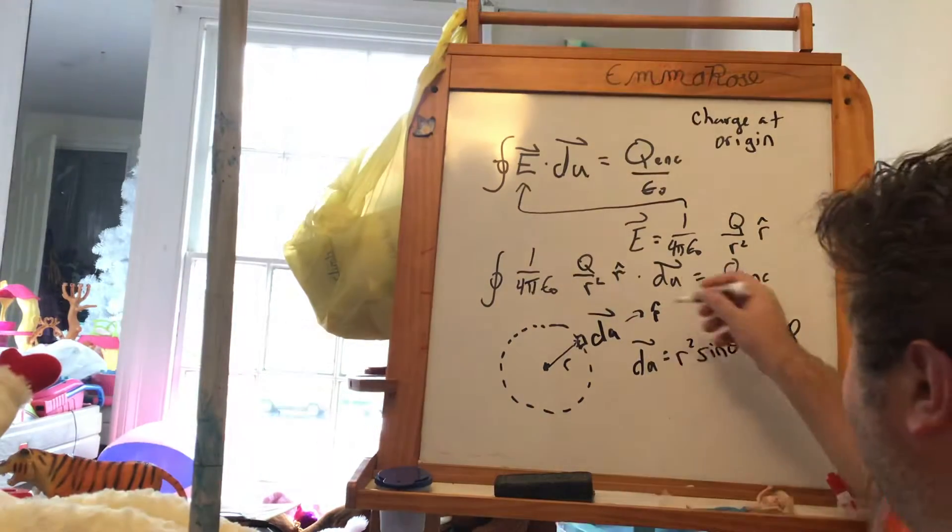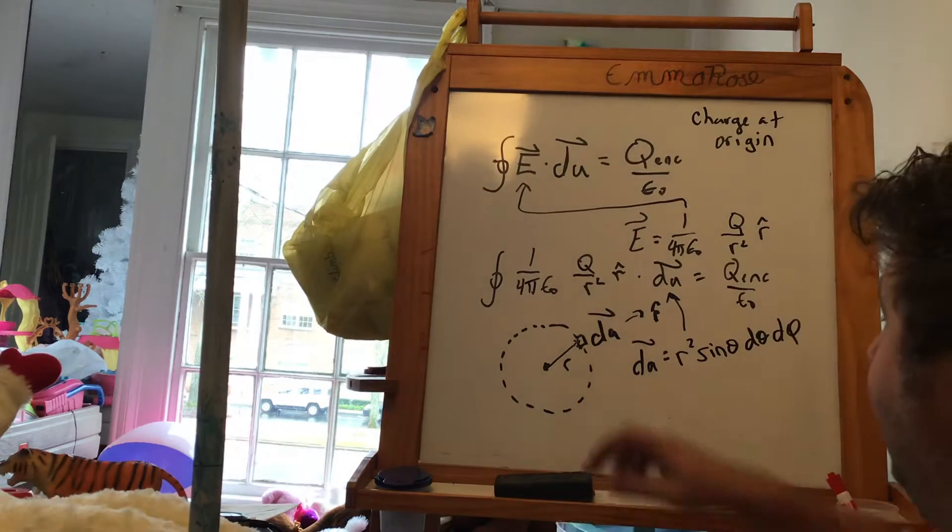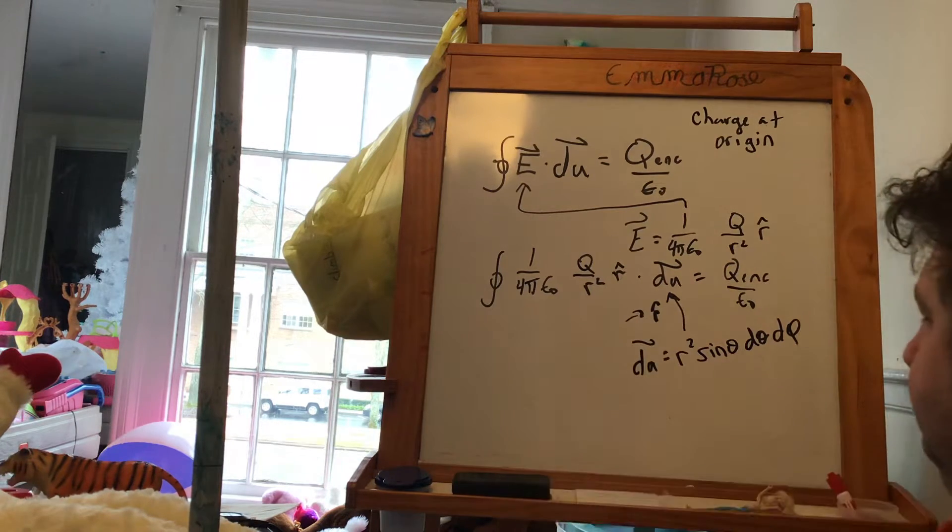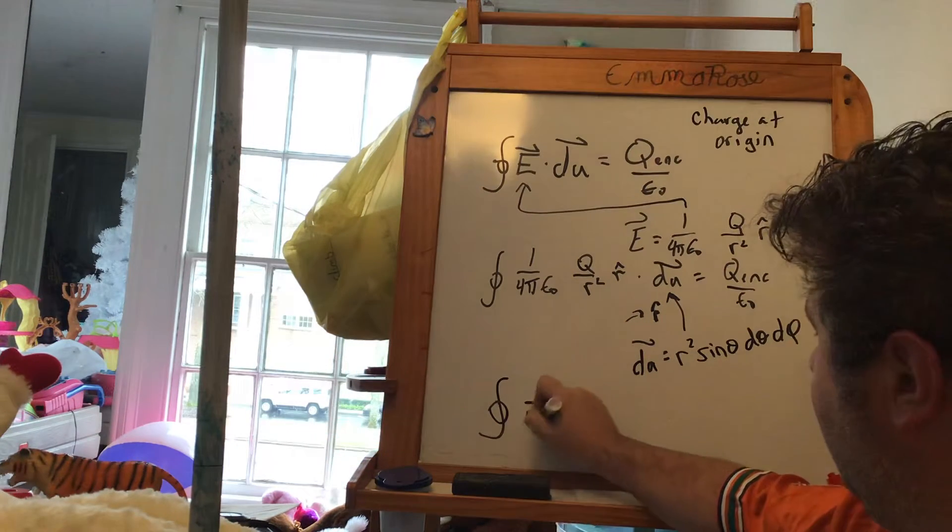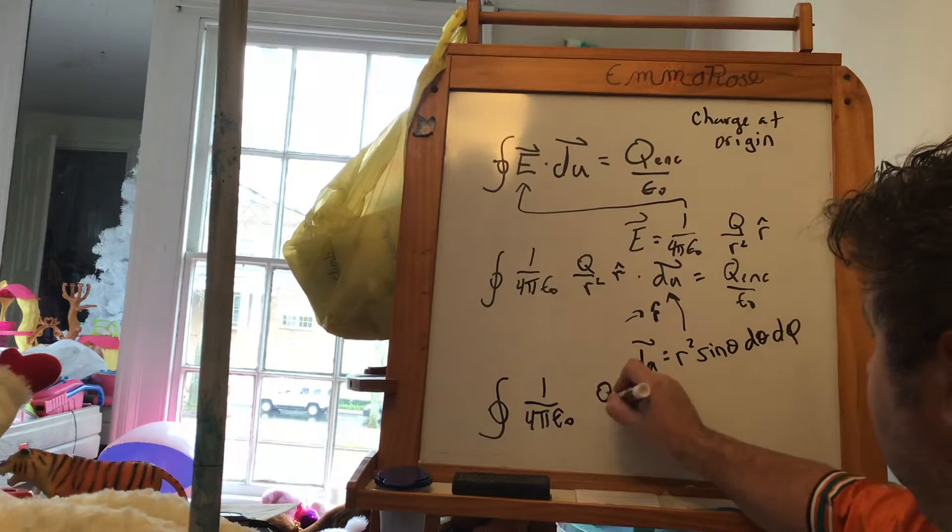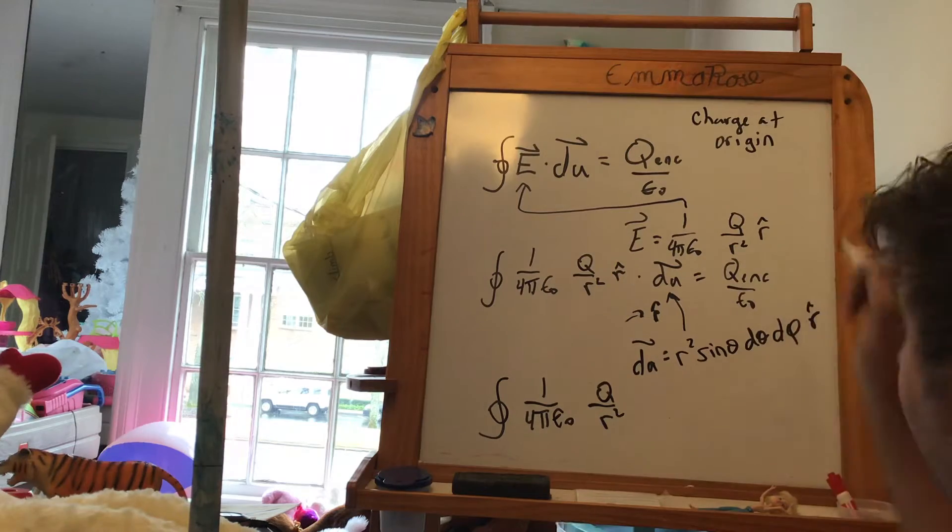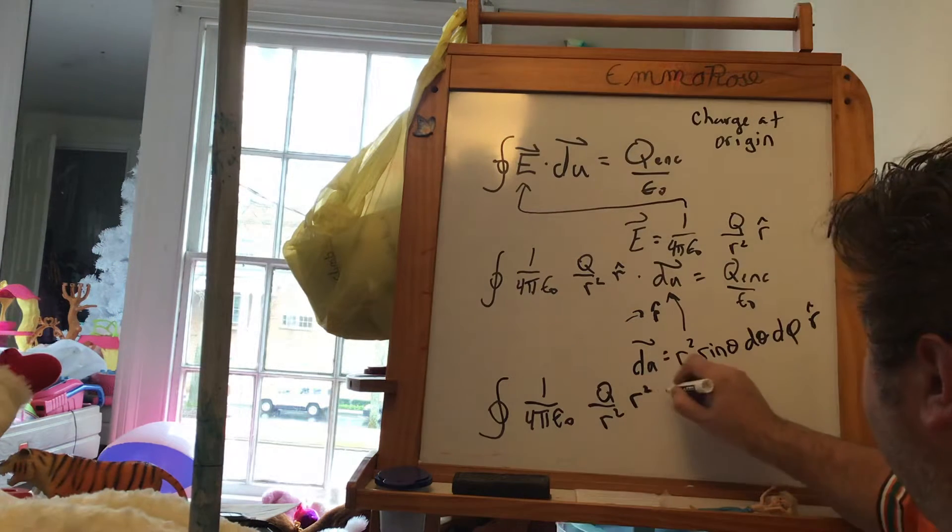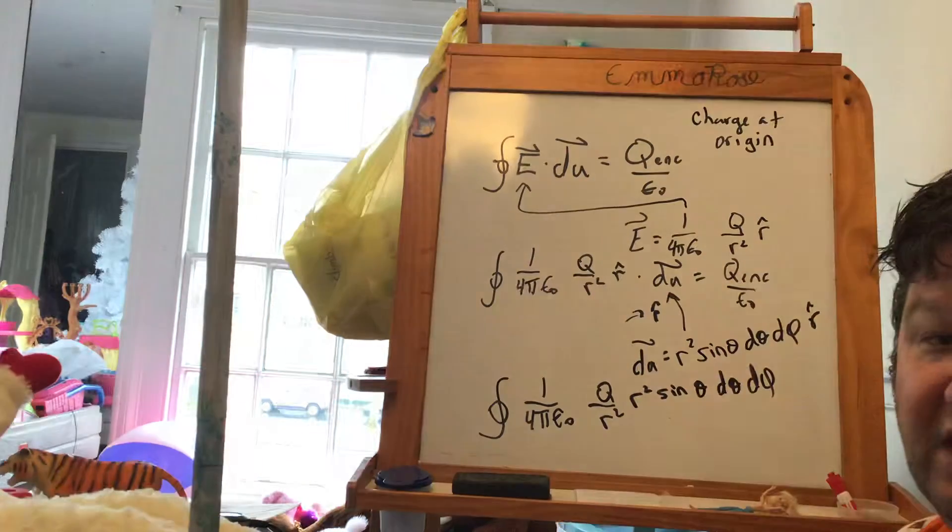So when I go ahead and multiply that in here for dA, I get the following expression. The integral around a closed loop, 1 over 4π epsilon nought q over r squared. Of course, it's going to be r hat dotted into r hat because they both point out. So that just gives me one r squared sine theta d theta d phi.